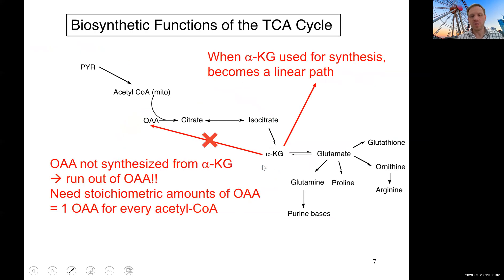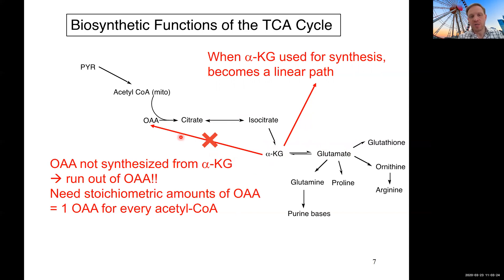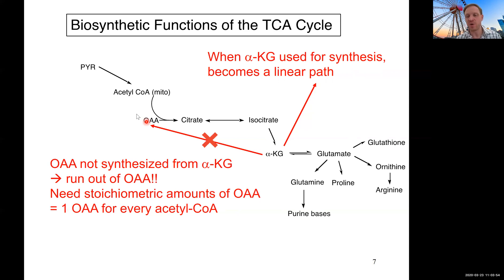Glutamate in turn can be used to produce a number of other amino acids. From aspartate you can produce a series of different amino acids critical for protein biosynthesis, as well as pyrimidine bases important in nucleotide biosynthesis. If you remove intermediates, you have to put the metabolites back in. If you're removing alpha-KG for synthesis of other compounds, this becomes a linear pathway from OAA and acetyl-CoA through citrate, isocitrate, alpha-KG, into glutamate. We need stoichiometric amounts of OAA to refill the cycle — for every one molecule of intermediate we remove, we have to put one back in.